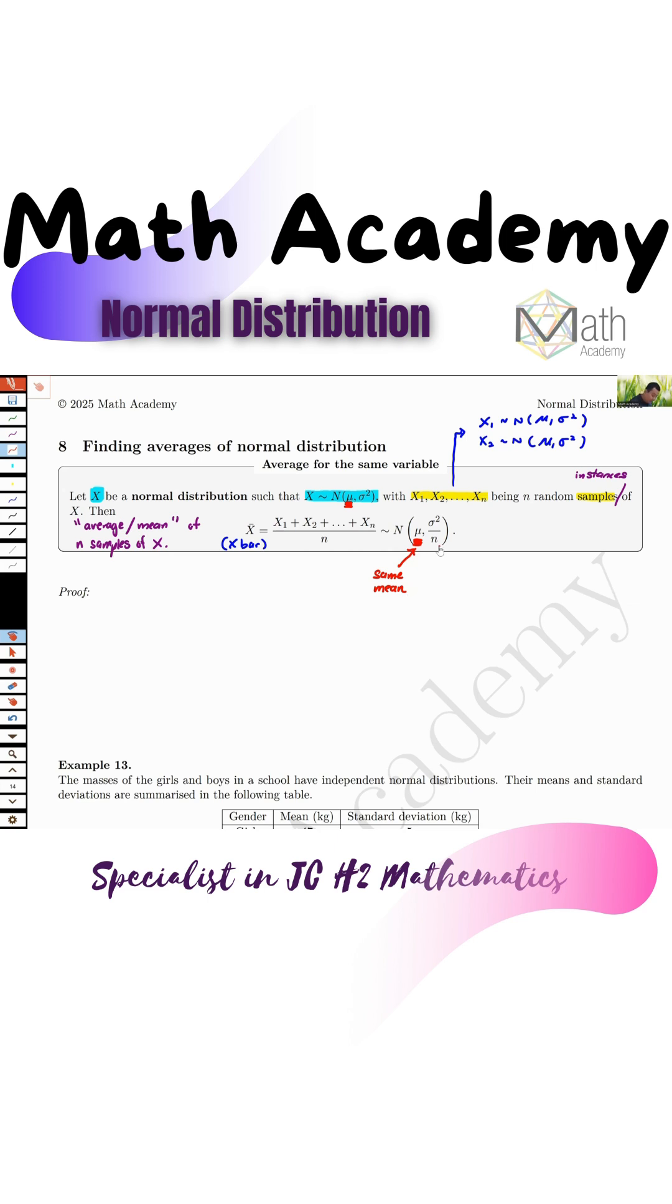But the variance is not the same. You must divide by n to get the variance. If initially it was sigma square, now it's sigma square over n for x bar.